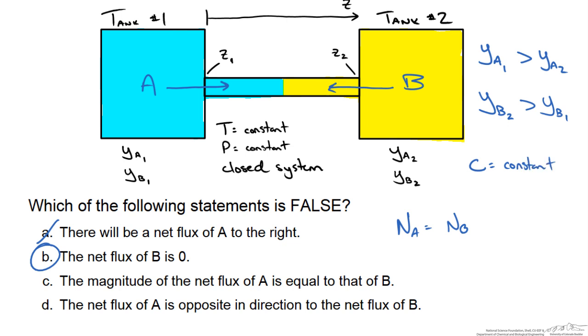If the net flux of A was not equal in magnitude to the net flux of B, we would get some kind of build up of these gases in part of our system and therefore our concentration couldn't be kept constant. We would have a pressure gradient and we know that can't happen here since it is a closed system.